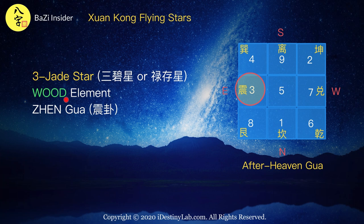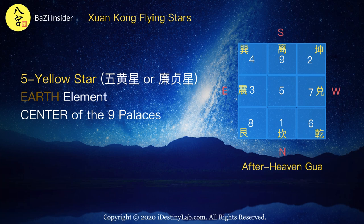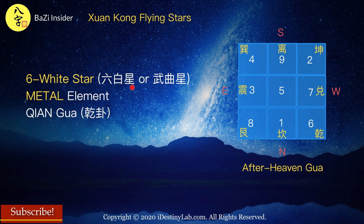Five yellow star is also known as Wu Huang Xing in Chinese. Its fine element is earth and it is located inside the center of the 9 palaces. Six white star is also known as Liu Bai Xing or Wu Qi Xing in Chinese. Its fine element is metal and it is located inside the Tian Gua of the 8 trigrams Ba Gua palaces.